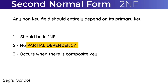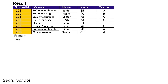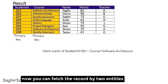A composite key means we cannot identify a record from just one particular column. In this student example, if Student ID alone is the primary key, we can't uniquely retrieve a record — Student ID 201 could refer to Software Architecture or Quality Assurance results. Similarly, Student ID 205 is enrolled in History and Software Architecture as well.